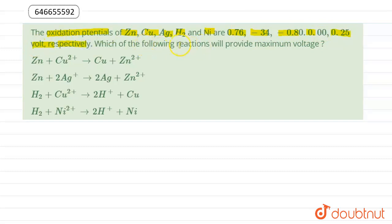Which of the following reactions will provide maximum voltage? Option (a): Zn + Cu²⁺ → Cu + Zn²⁺. Option (b): Zn + 2Ag⁺ → 2Ag + Zn²⁺. Option (c): H₂ + Cu²⁺ → 2H⁺ + Cu. Option (d): H₂ + Ni²⁺ → 2H⁺ + Ni.